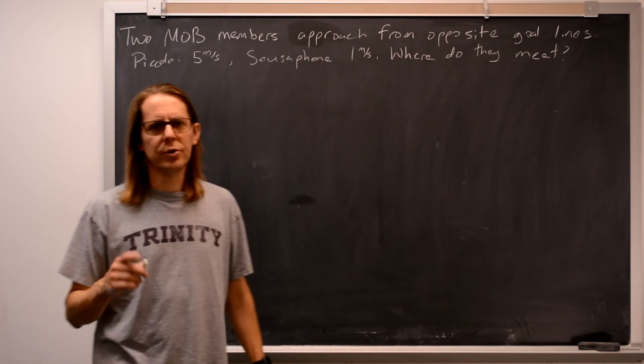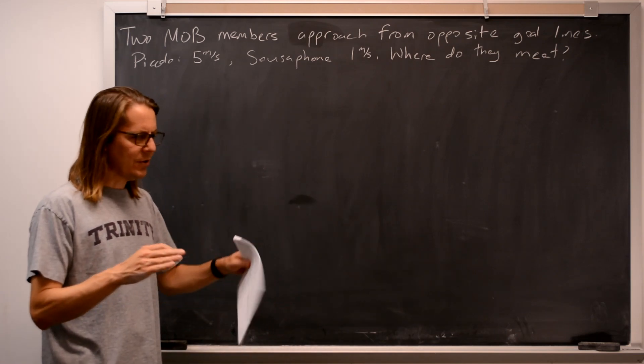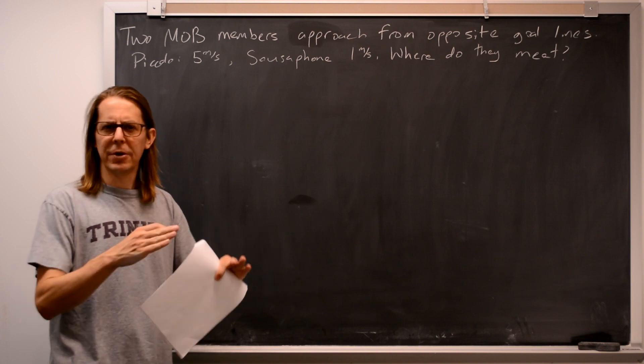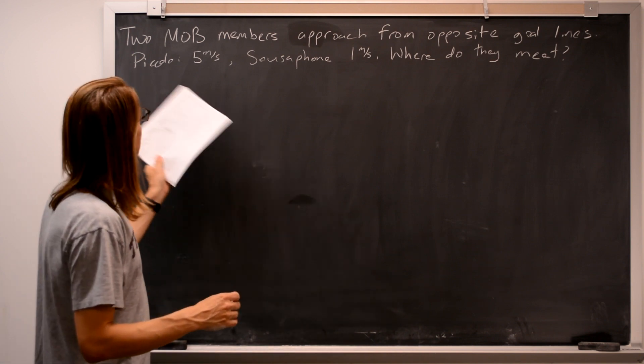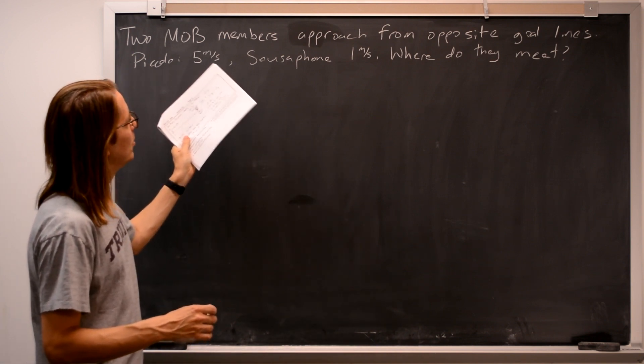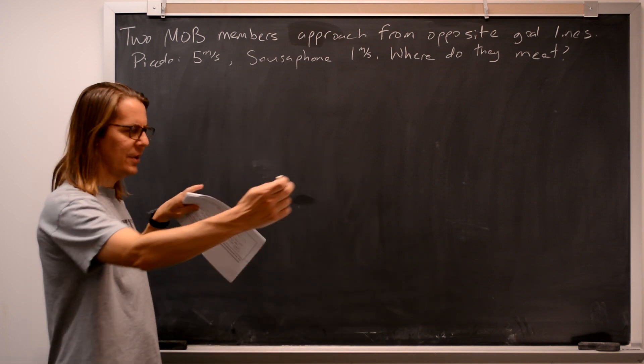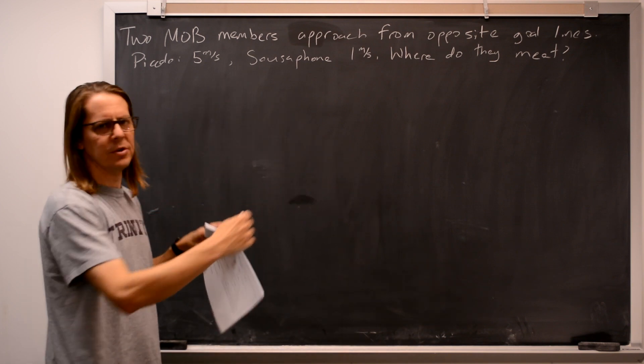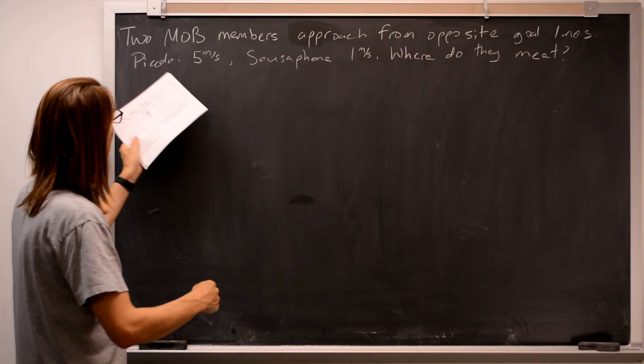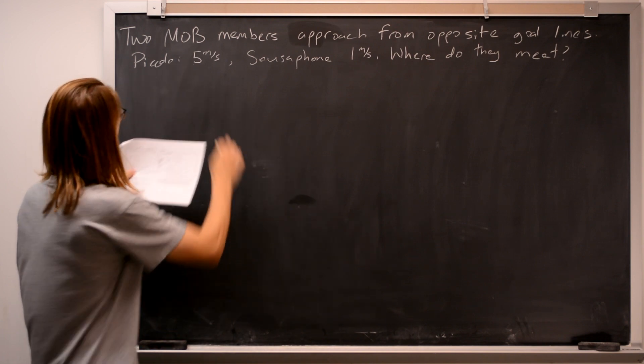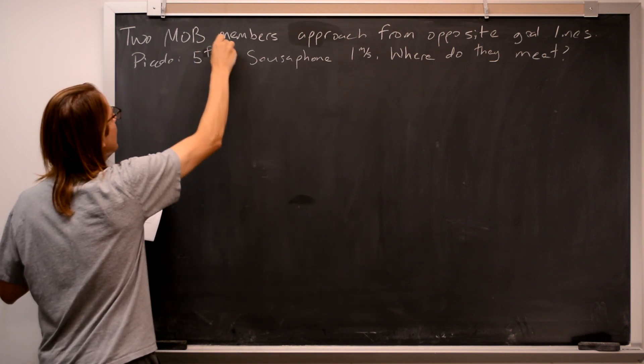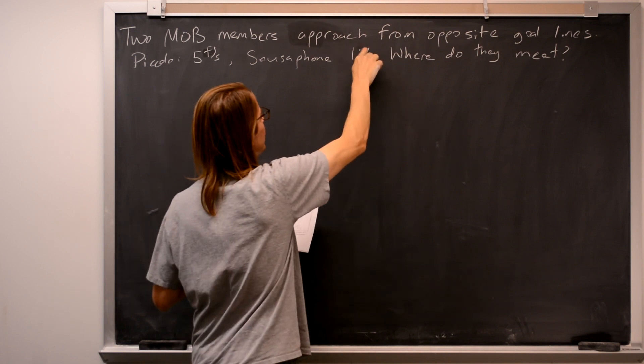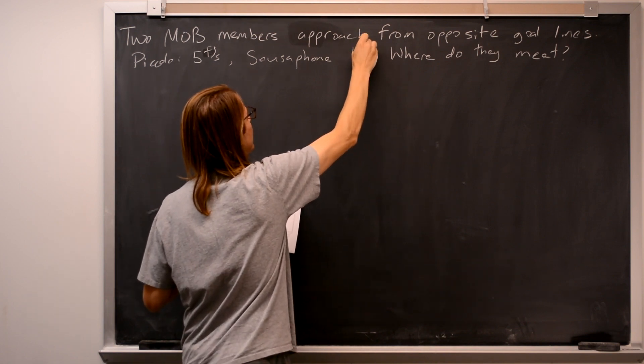This problem is an example of what I call two-body kinematics, where you have to keep track of two things and figure out some relationship between them. So here we have two mob members marching from opposite end zones towards each other. One is just carrying a piccolo, so they're going five feet per second. And the other is carrying a sousaphone, so they're going one foot per second.